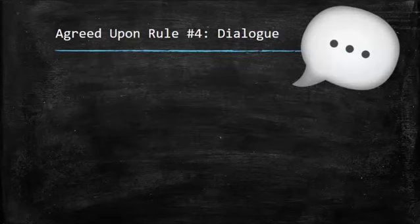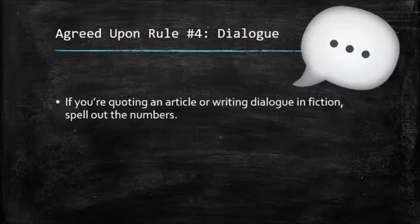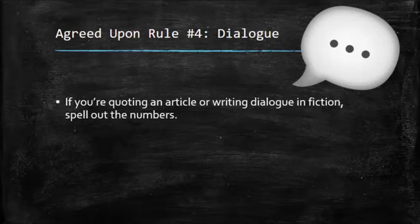The last rule refers to dialogue and this one is probably the easiest of all. It says if you're quoting an article or writing dialogue in fiction, as always, you're going to spell it out.